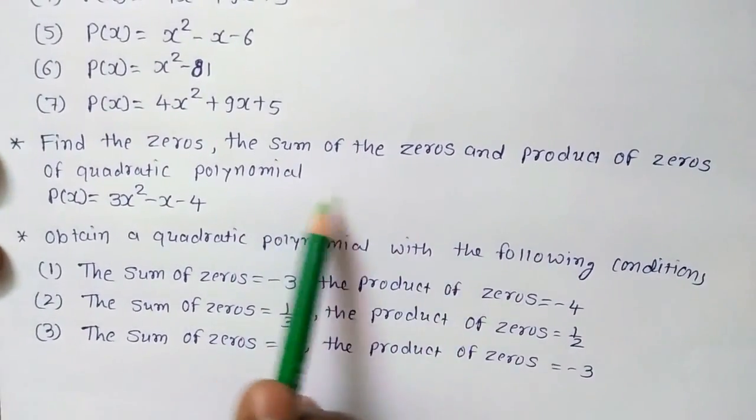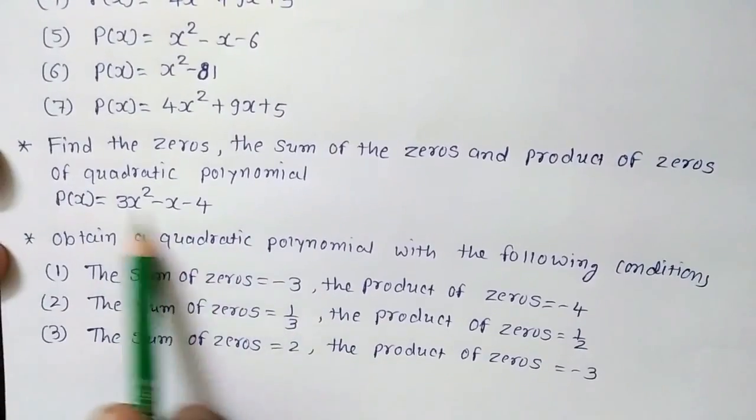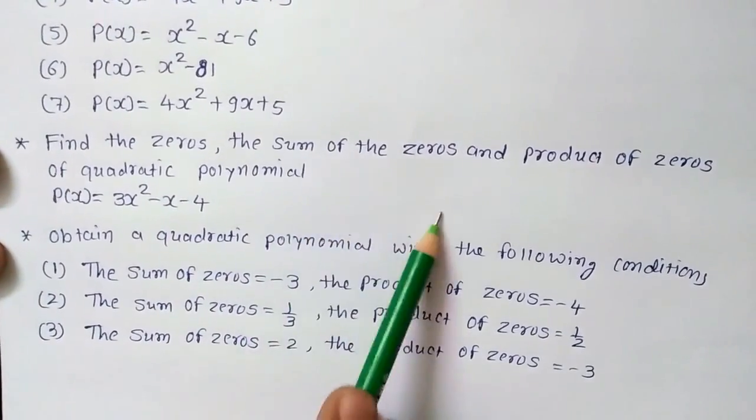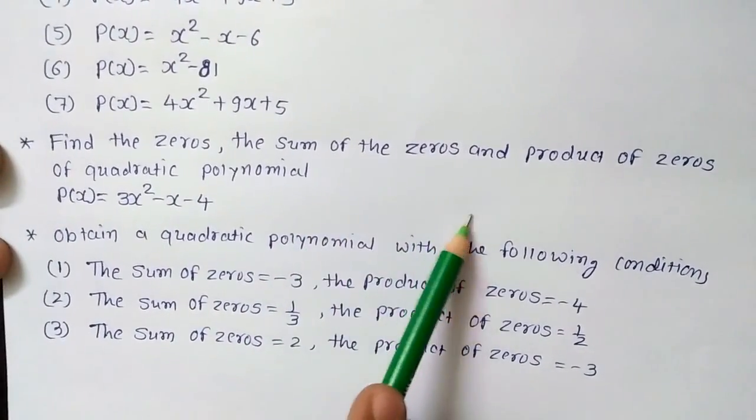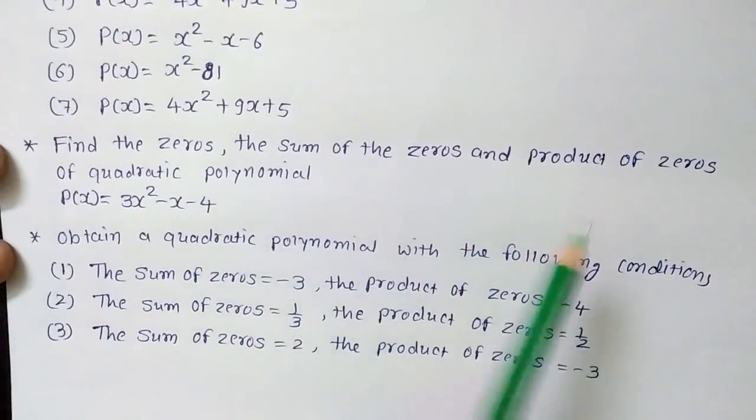Or either you can go with the values that is alpha and beta that you can add or you can multiply and you will get the answer. Anyway, you should get it.